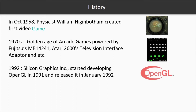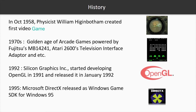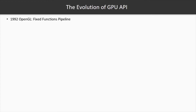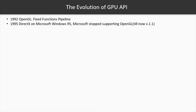Silicon Graphics successfully launched OpenGL in January 1992, which was considered a revolution. Three years later, Microsoft released a game SDK for Windows 95 called DirectX. Since then, they did not support OpenGL under Windows Core and pushed GPU programmers and game developers to use DirectX. In 1992, OpenGL was released as a standard GPU API with a fixed-function pipeline, and just three years later, DirectX was released by Microsoft on Windows 95, who stopped supporting OpenGL in Windows.